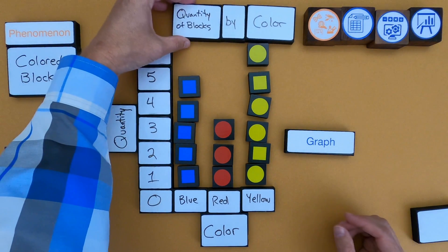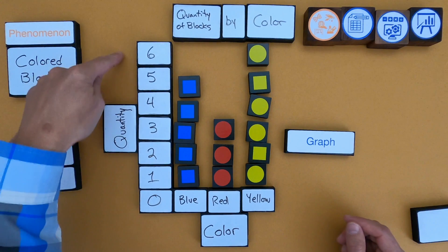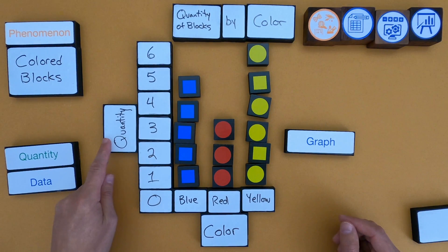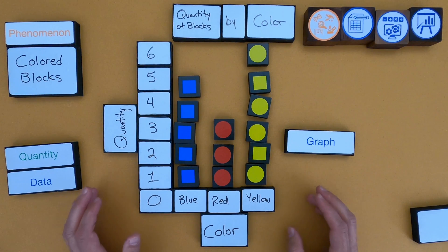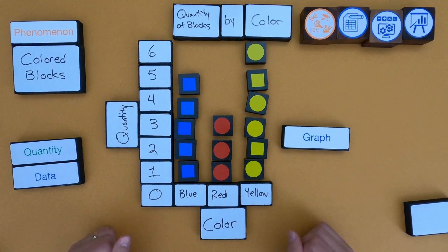Okay, so now I've got a title. A quick way to do the title is just to talk about what's on the y-axis, which is the quantity of blocks, by the color. And so this is a simple graph. One neat thing about this is it wouldn't take me too long to develop a different graph. So let me do that.